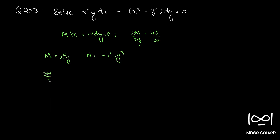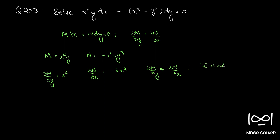So ∂M/∂y is x squared and ∂N/∂x is equal to minus 3x squared. So ∂M/∂y is not equal to ∂N/∂x. Therefore the differential equation given is not exact.